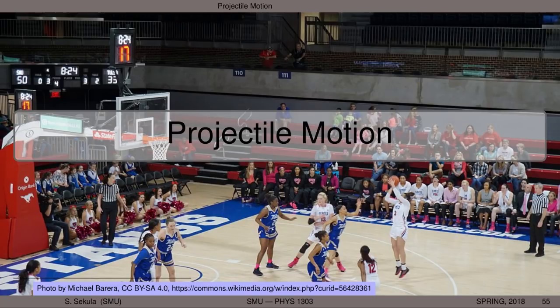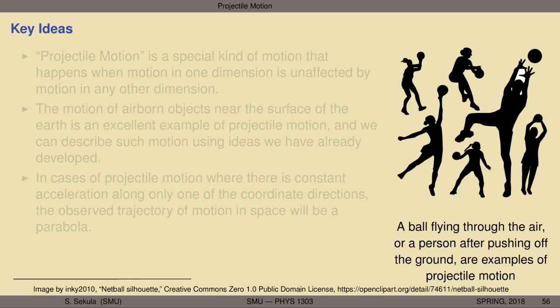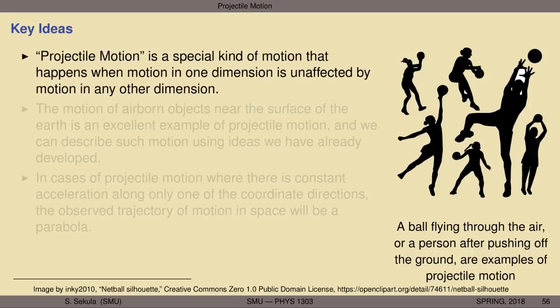Let us begin to look more deeply at projectile motion and build a toolkit based on our previous explorations of motion in more than one dimension to describe this motion. First, let us lay out some of the key ideas that we are going to cover in this lecture. We will find that projectile motion is a special kind of motion that happens when motion in one dimension is unaffected by motion in any other dimension.